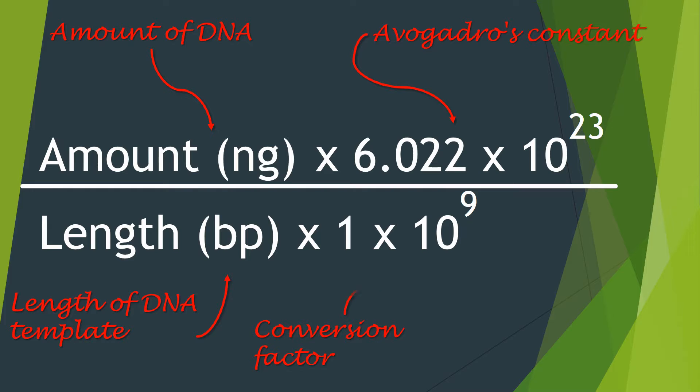And this value is used as a conversion factor to convert to nanograms and then also multiply by 660. Now the 660 in the equation represents the average mass of one base pair of double-stranded DNA, and this is given in grams per mole.